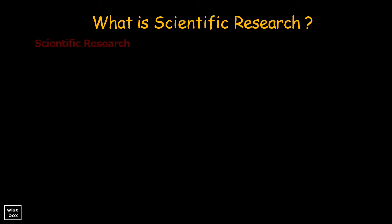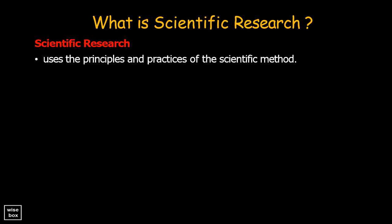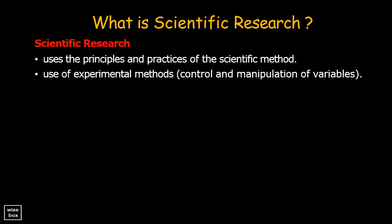Research is scientific when it uses the principles and practices of the scientific method. The use of experimental methods ensures the nature of research is scientific. These methods involve successful control and manipulation of variables associated with the research.